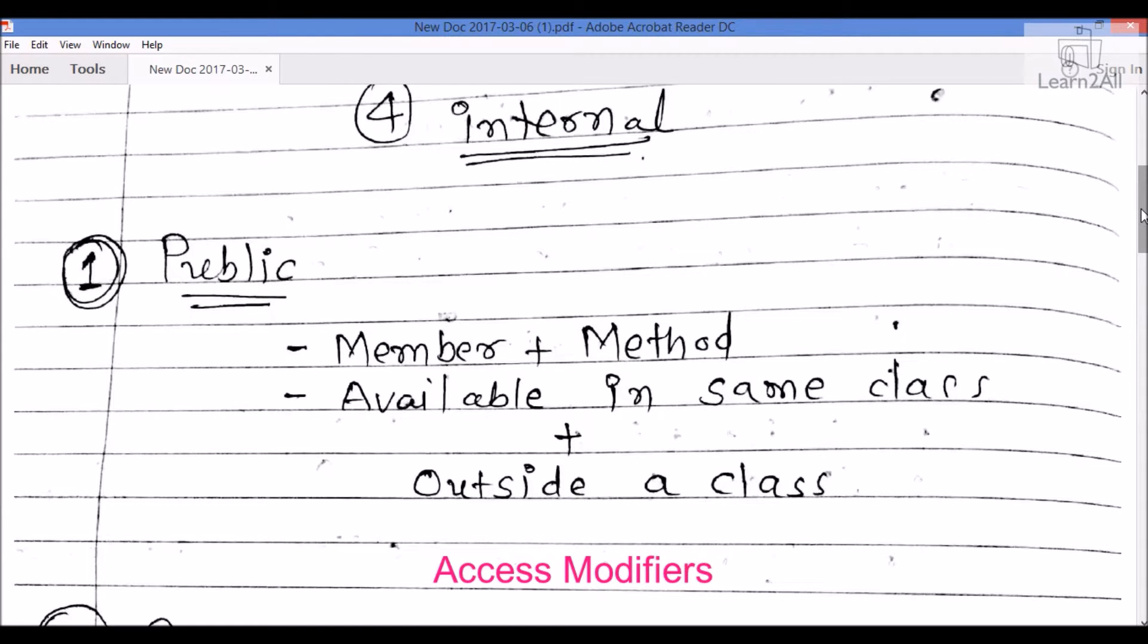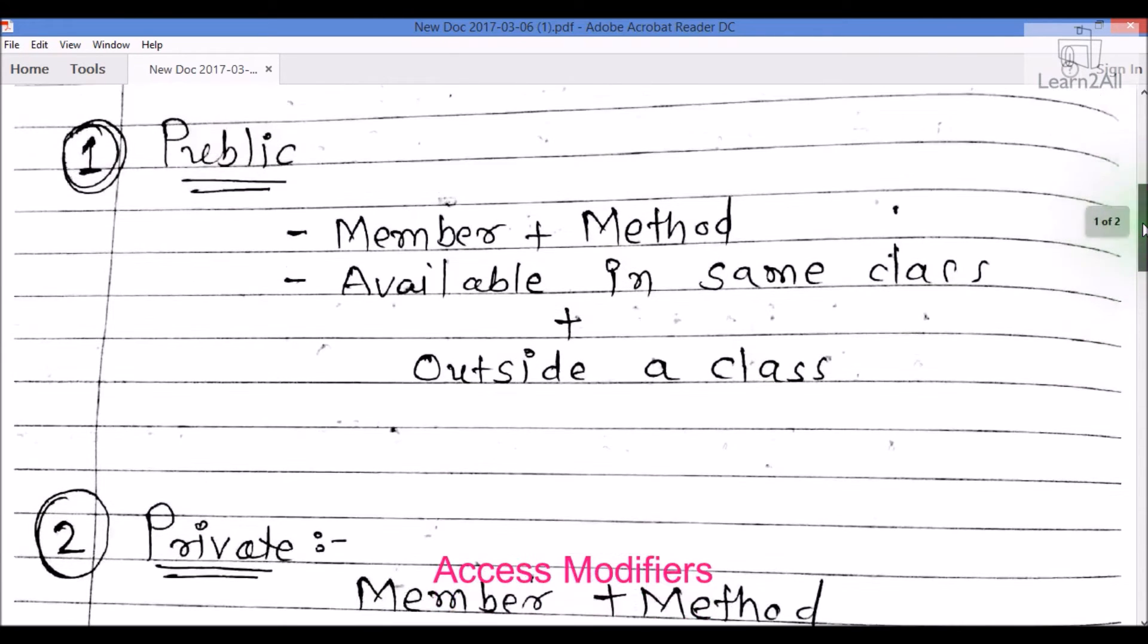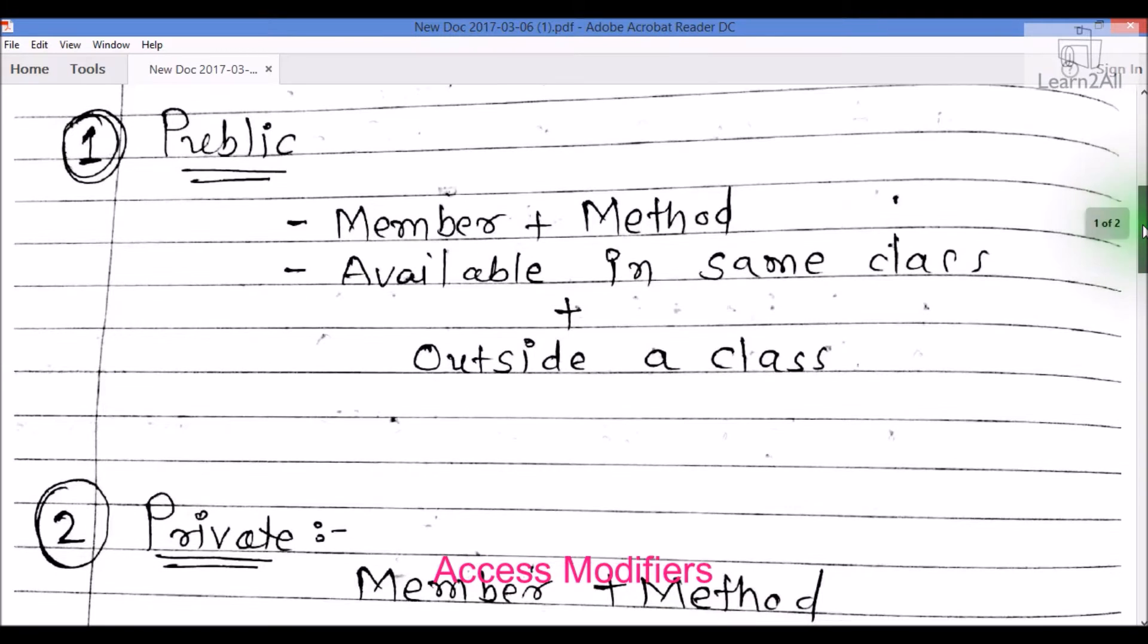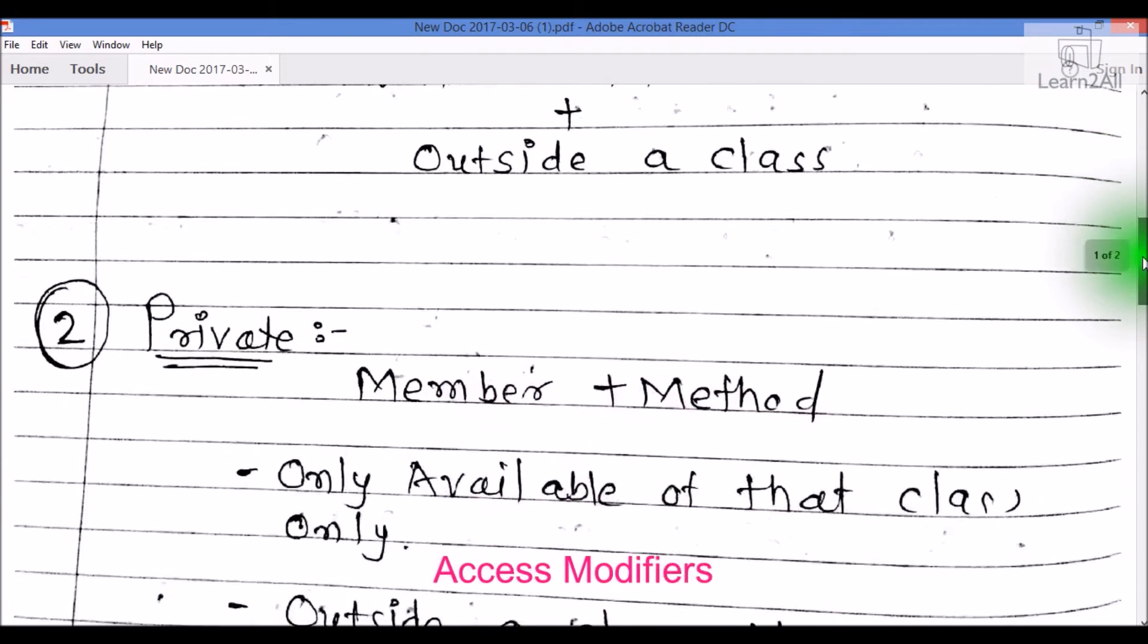The first one is public. Public members or methods are available in the same class and outside the class. Suppose you have declared your data member or member function as public - you can access it within the same class as well as from outside the class. For example, if I have created a class named Transaction and declared a method GetTransactionDetail as public, I can use this method from another class and easily access it using its object.